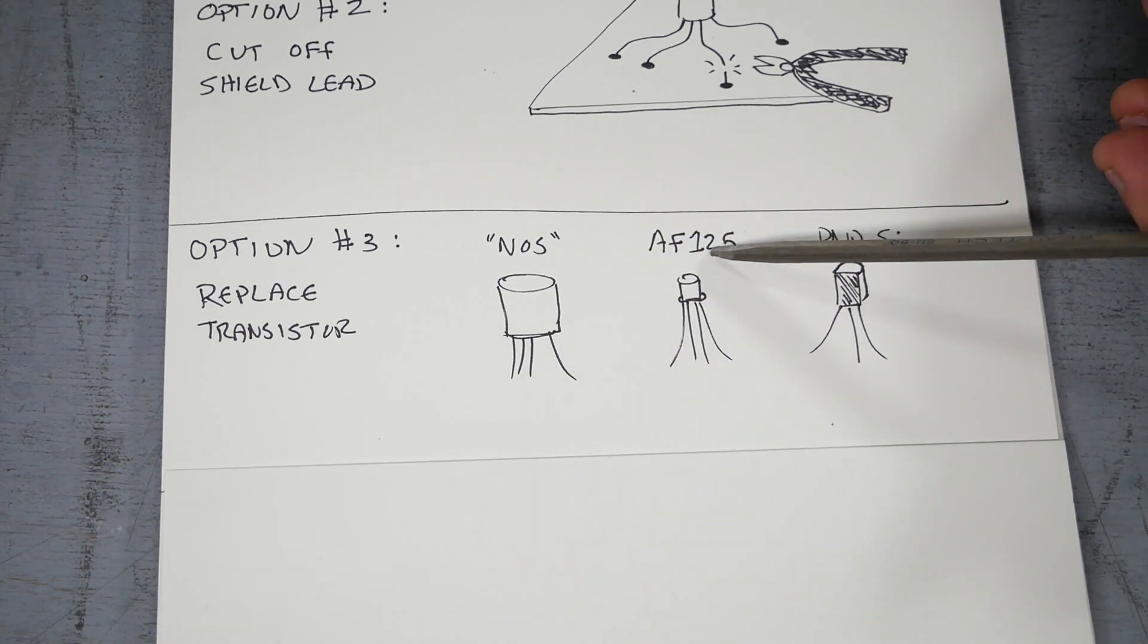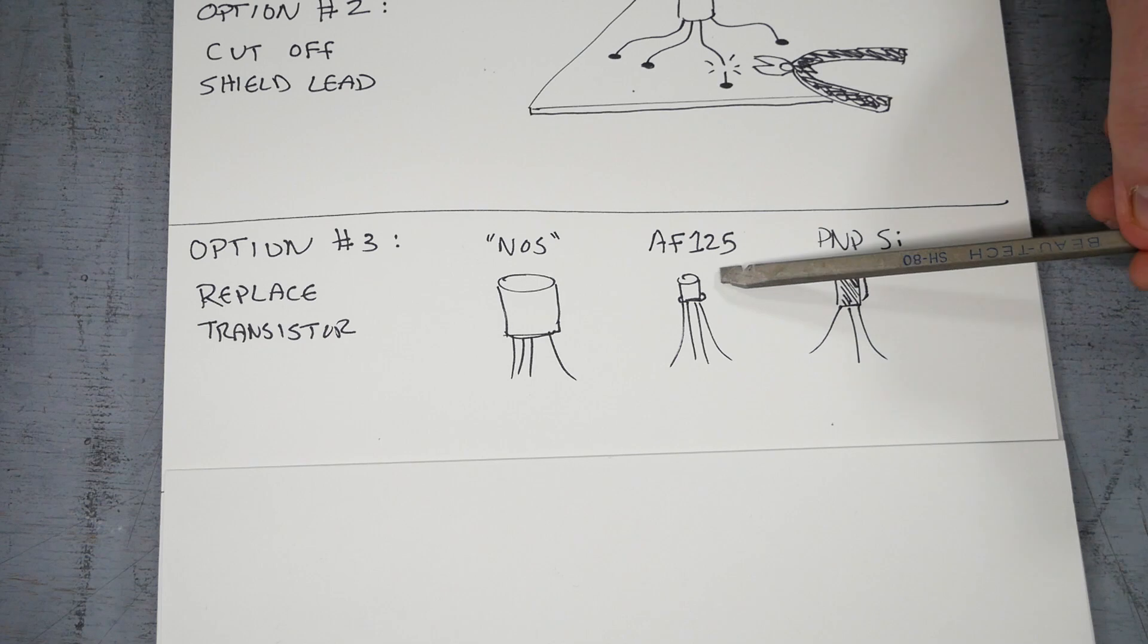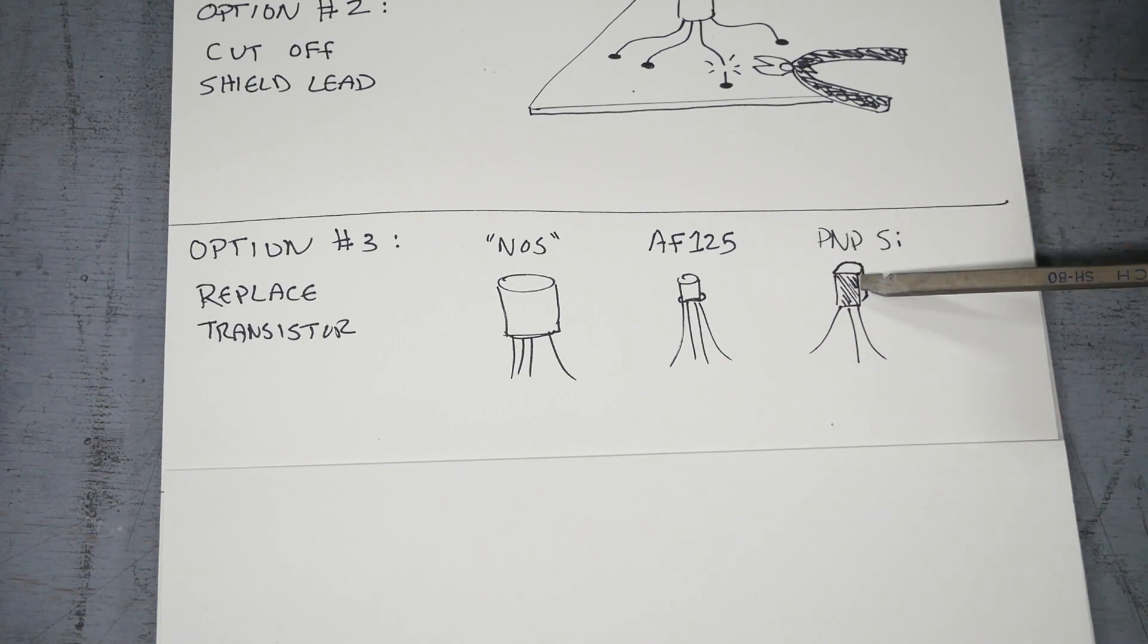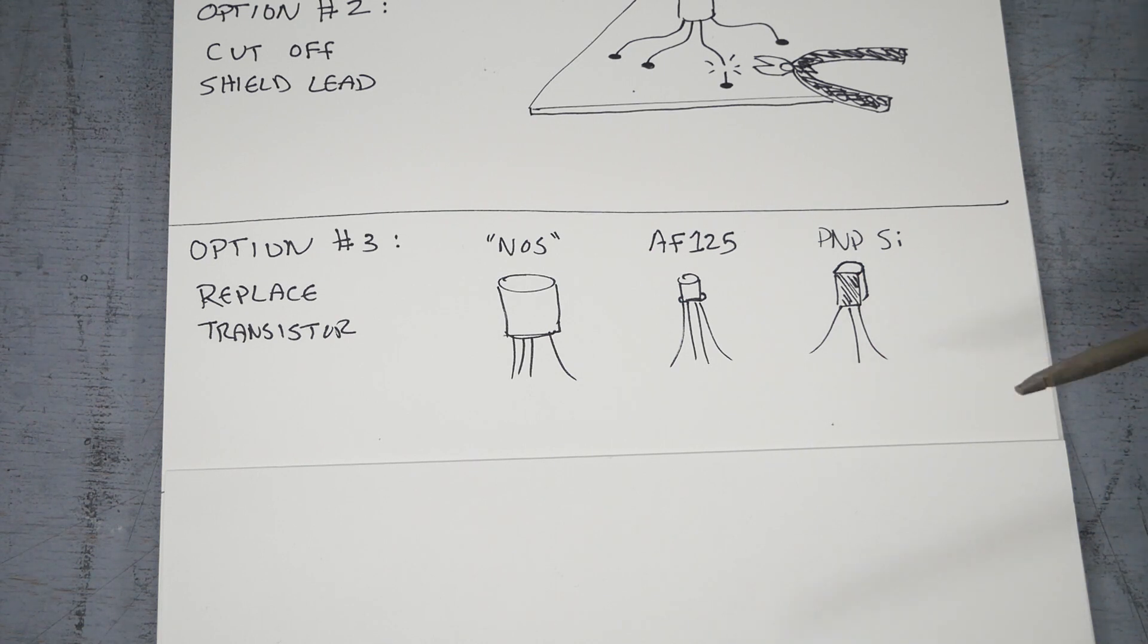There are other transistors that can work generally in those circuits. It's just a PNP BJT transistor. So the common germanium suggested replacement is the AF125. Those are somewhat available. You could also try replacing with a silicon transistor, probably going to have to change some other components to get the transistor biased correctly. The problem with these two options is they are not going to look right. They are obviously in a different case. They are going to look like replacements. Anyone will be able to pick that out immediately.